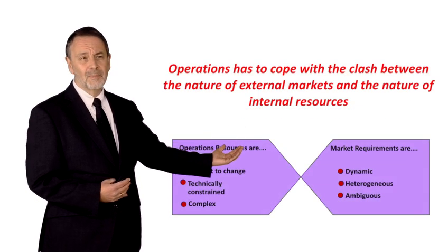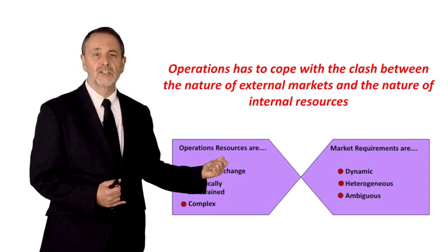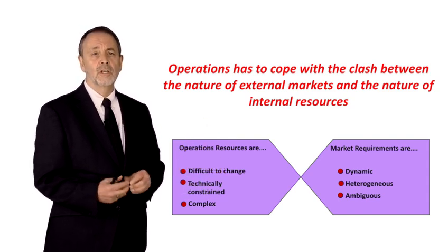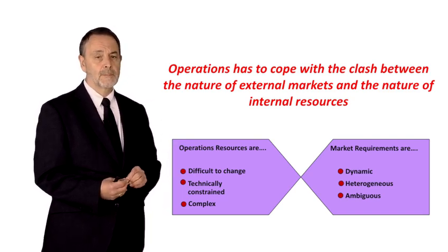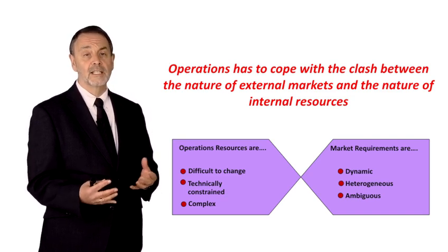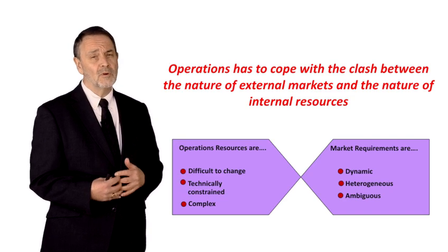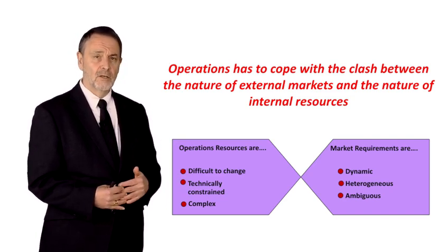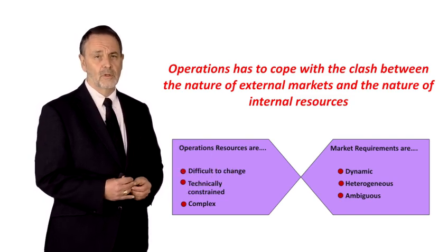Quite simply speaking, the marketplace has requirements that are dynamic — they're constantly changing. Depending on where you're marketing your products around the world, you'll have very different expectations from your consumers. No two consumers are the same, so we have heterogeneity between requirements of individual customers. This is even more important when you're looking at business-to-business markets, where dealing with one large corporation can be very different from dealing with another.